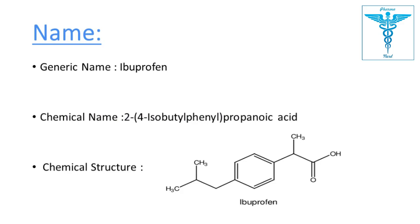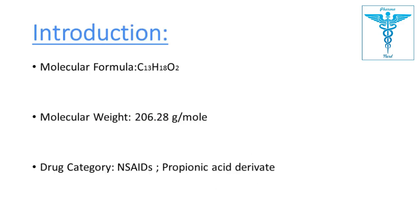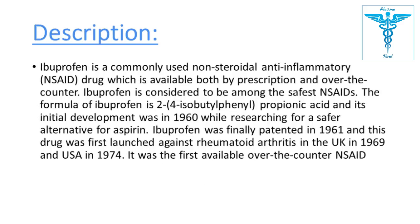The generic name of the drug is ibuprofen. The chemical name is 2-(4-isobutylphenyl)propanoic acid. The molecular formula is C13H18O2 and the molecular weight is 206.28 grams per mole. The category is NSAID and propanoic acid derivative.